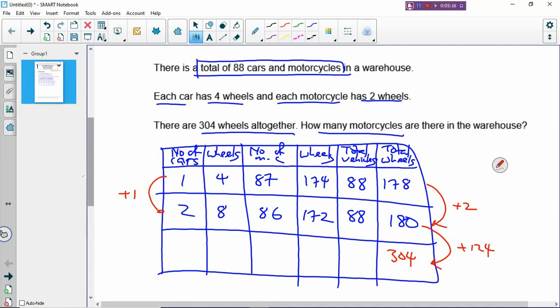Then how many more cars is that? If you increase one car, you have two more wheels. And if there are 124 more wheels, then how many more cars? You take 124 divided by 2. So you must have increased by 62 cars. How many cars in the third row? You take 2 plus 62. That will give you 64 cars. And how many motorcycles? You take 88 minus 64. That will give you 24 motorcycles.